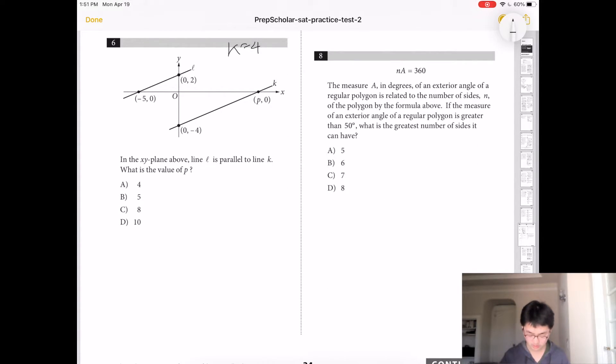Number 6, in the xy plane above line L, it's parallel to line K. What is the value of p? So this line, the slope of that line would be 2 over 5. It's 2 minus 0 and 0 minus negative 5. So line would be y equals 2 fifths x. So we're just going to shove this in here so we can get 0 and negative 4. So in order to get negative 4, it's got to subtract by 4. So if we shove 0 in for y, then we get 2 fifths x minus 4 equals 0. 2 fifths x equals 4. So the answer would be D.